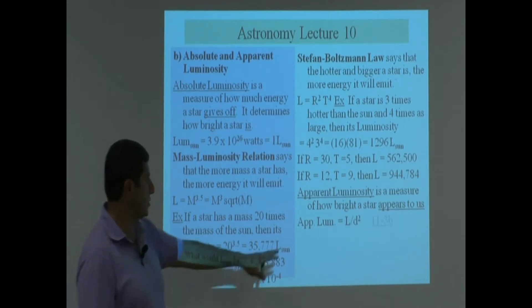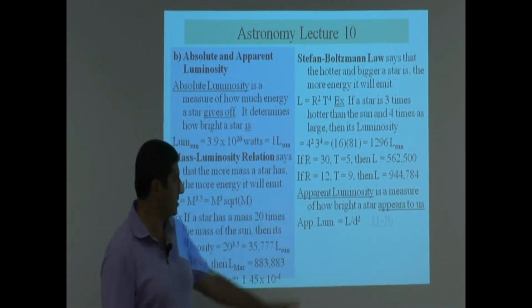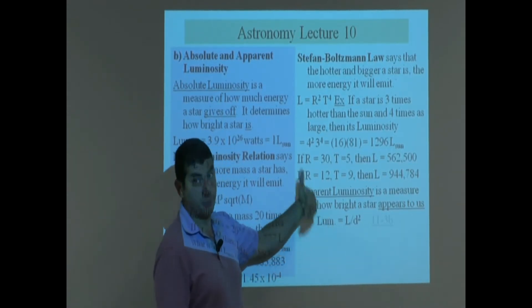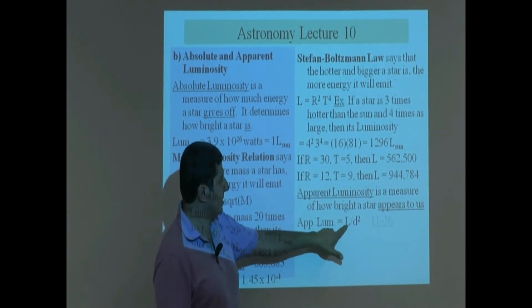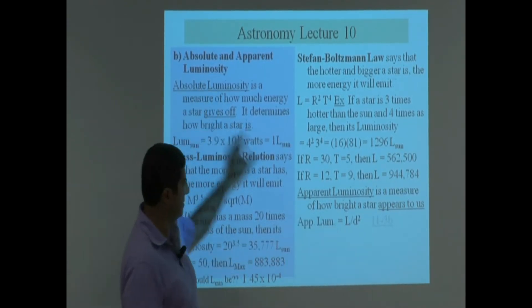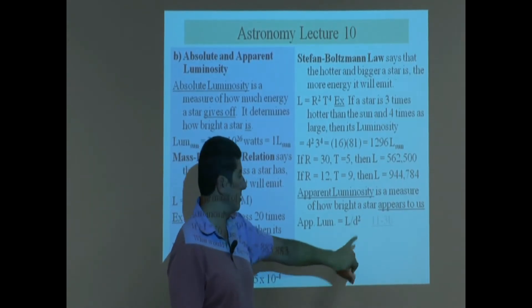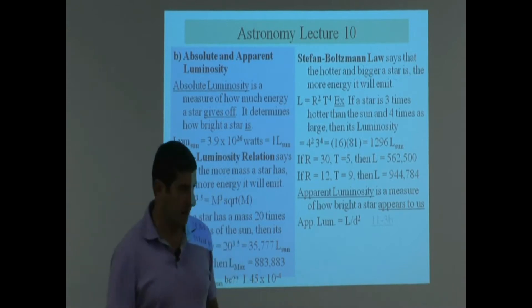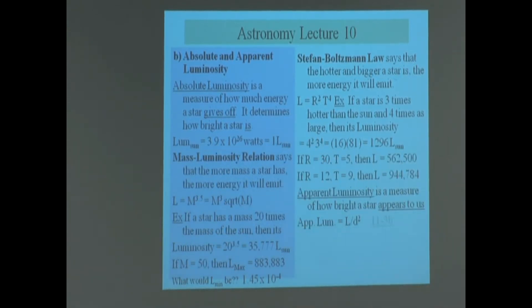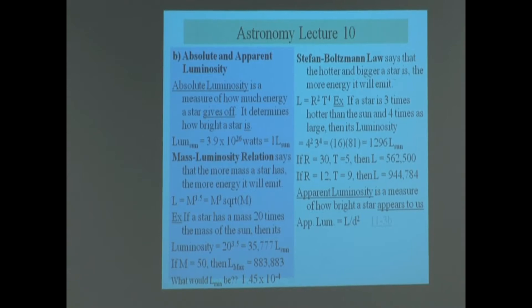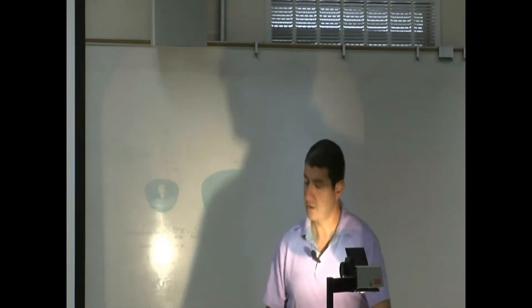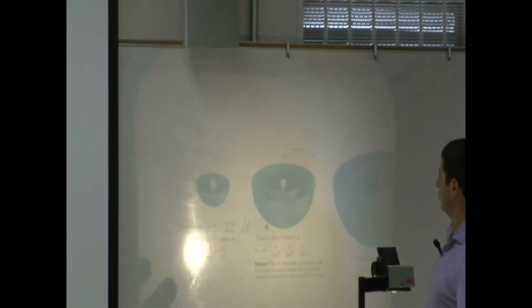The equation is: apparent luminosity is proportional to the actual luminosity divided by the distance of the star from us squared. You might ask why is this distance squared, and this picture shows you why.